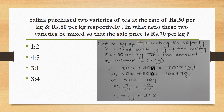Salina purchased two varieties of tea at the rate of Rs. 50 per kg and Rs. 80 per kg respectively. In what ratio should these two varieties be mixed so that the sale price is Rs. 70 per kg?